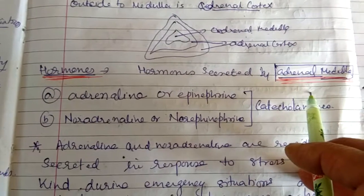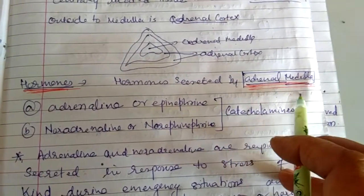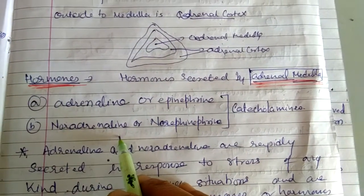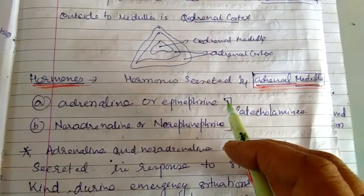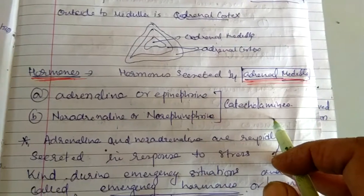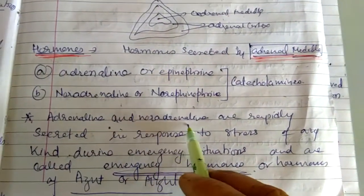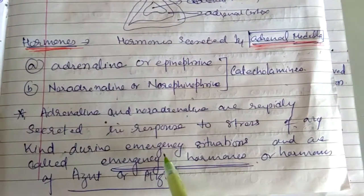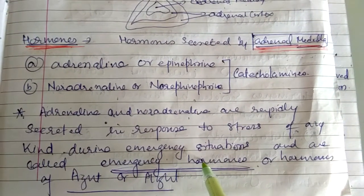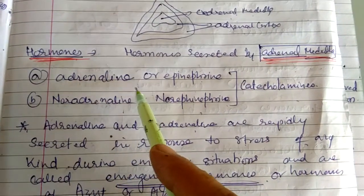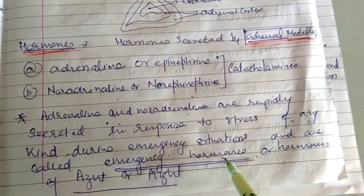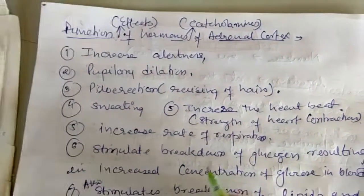First we are taking up the hormones secreted by adrenal medulla. Adrenal medulla secretes two hormones: adrenalin, which is also called epinephrine, and noradrenaline, which is also called norepinephrine. Both of them are collectively called catecholamines. These adrenalin and noradrenaline hormones are actually secreted in response to stress — that means in an emergency situation the gland gets stimulated and starts secreting them. So these hormones are called emergency hormones or fight-or-flight hormones.